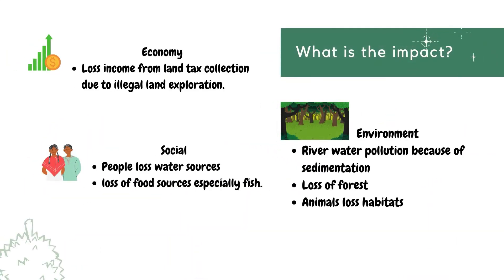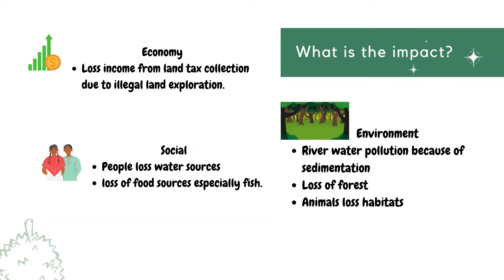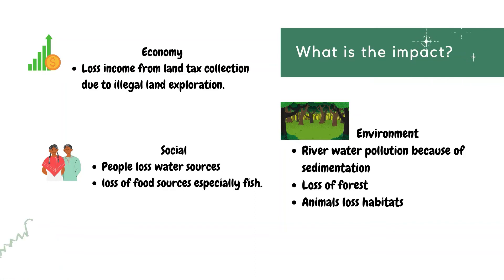What will be the impact of the durian life cycle? Firstly, we will look at the economic impact. The impact to the economy is that the country might lose income related to tax and land because of illegal durian cultivation. The profit from selling durian is very high, so people will try to do illegal durian cultivation.